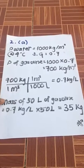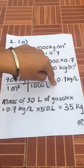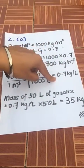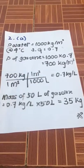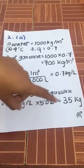So mass of 50 liters of gasoline: you take the density of per liter to find out the density of 50 liters of gasoline, where we will get 35 kg.